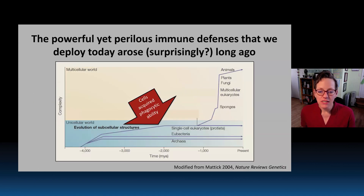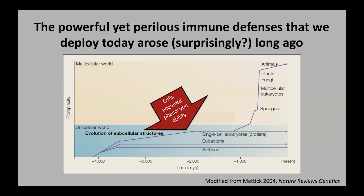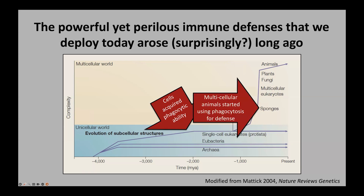Mapping that back onto this timeline, over this long evolutionary history before multicellular organisms were around, cells acquired phagocytic ability — the ability to ingest microbes and other particles from the environment. In fact, phagocytosis is thought to be part of how archaea and single-cell eukaryotes evolved. More recently, multicellular animals, starting with the sponges through to vertebrate animals such as ourselves, started using phagocytosis for defense. So this ancient phagocytic capacity — using the cytoskeleton to surround and engulf things from the external environment — has been deployed in defense of multicellular animals.